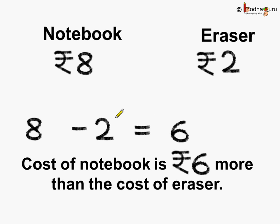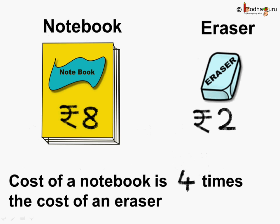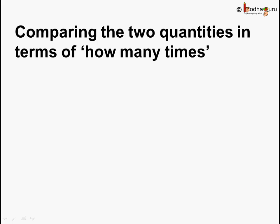First we did comparison using subtraction: 8 minus 2 is equal to 6, and we figured out that the cost of the notebook is rupees 6 more than the cost of the eraser. Next we did the division method and compared the prices of the two things, and figured out that the cost of the notebook is 4 times the cost of the eraser. So when we compare two quantities in terms of how many times, it is called ratio.